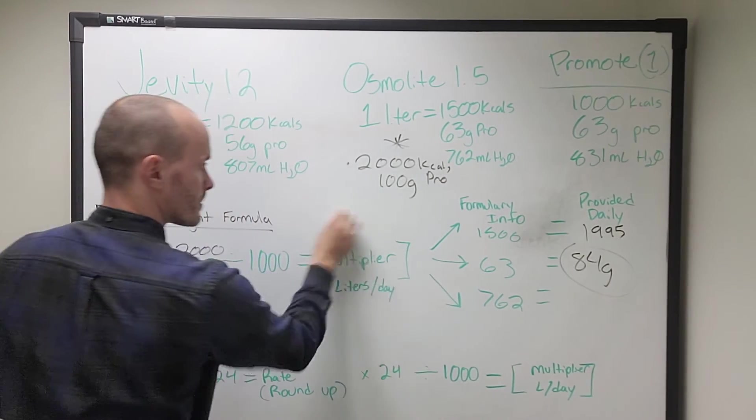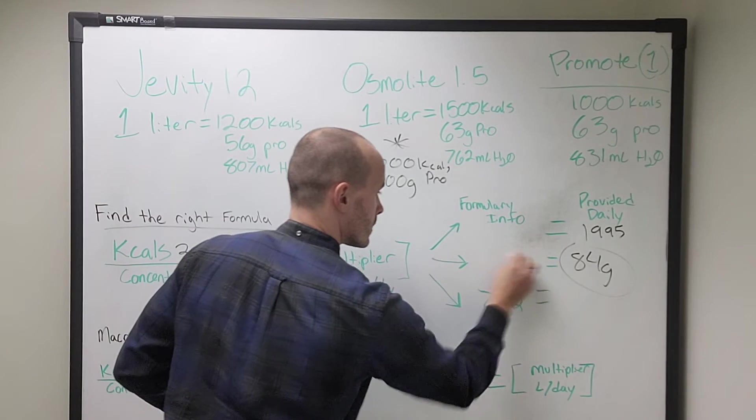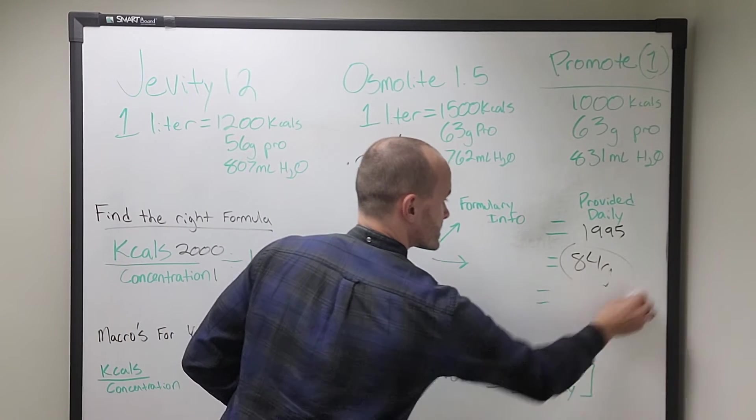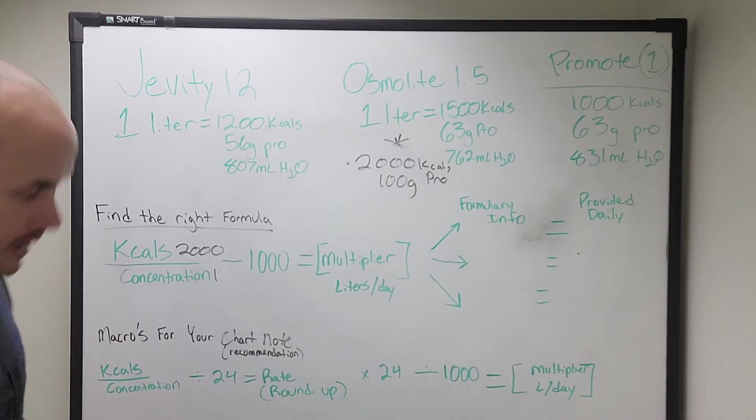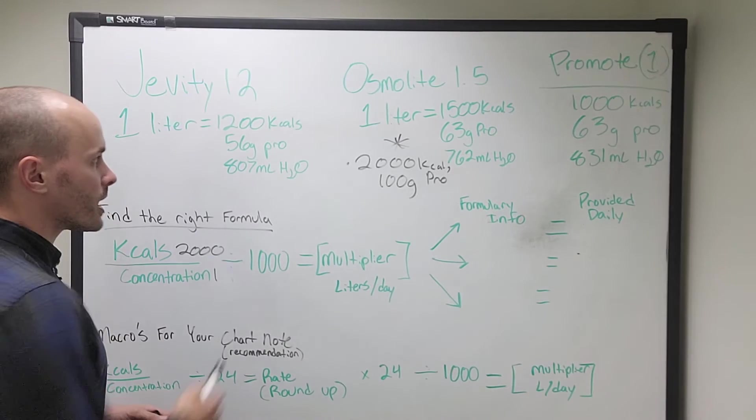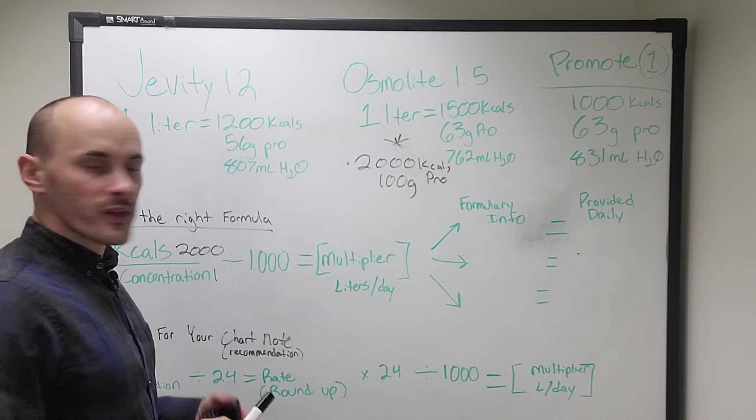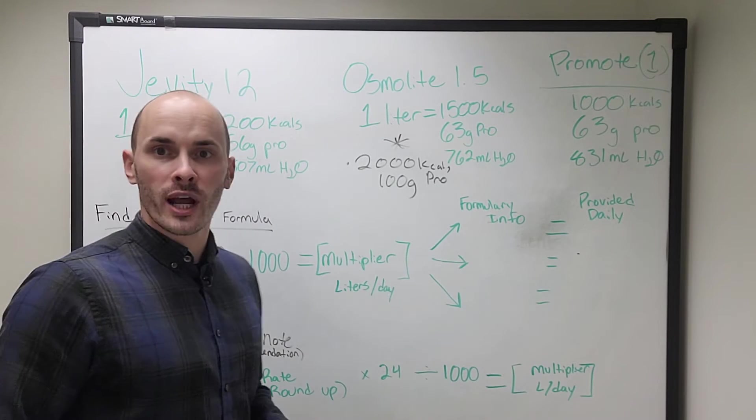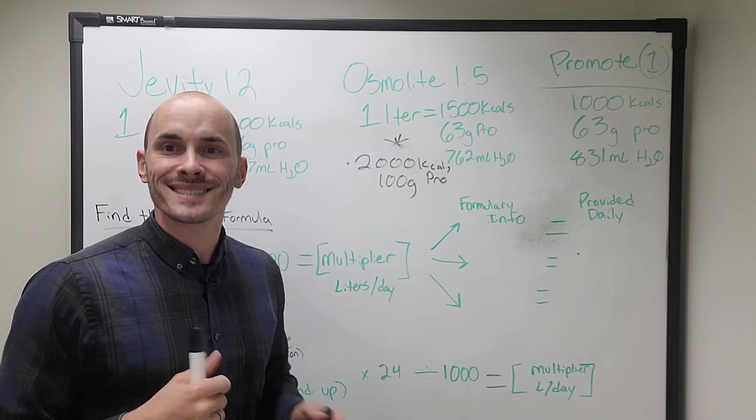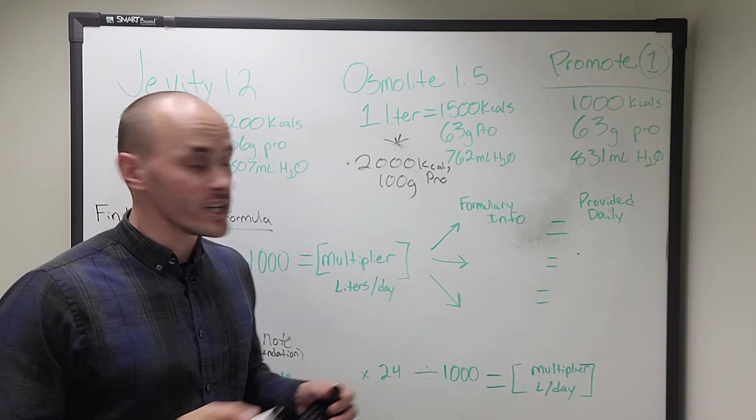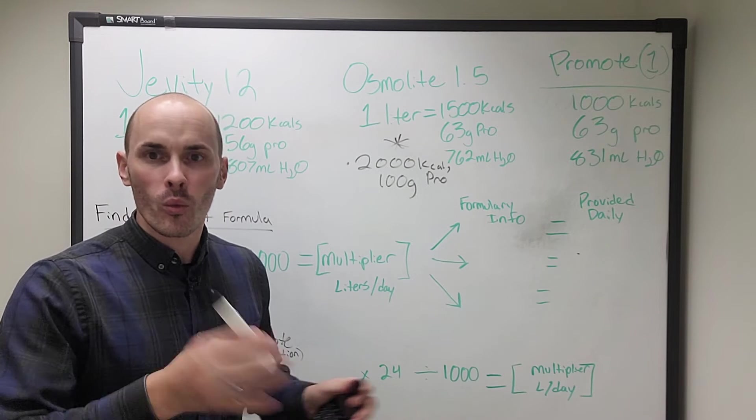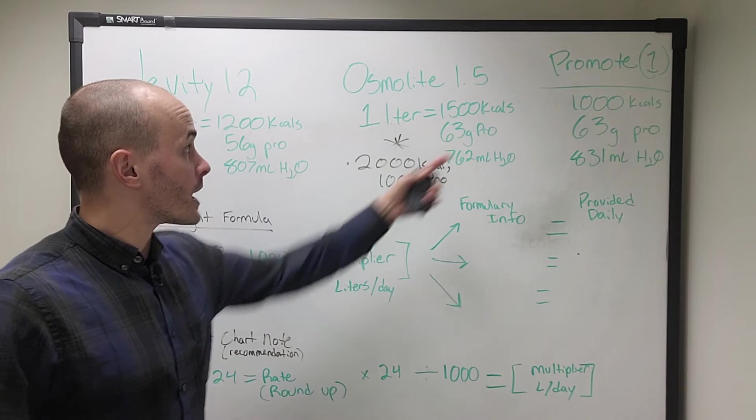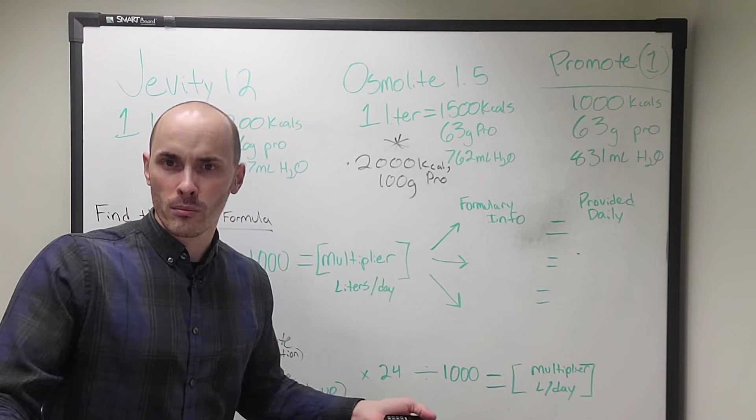Now let's try this again. I'm going to erase these numbers. We're going to erase these numbers here and let's try a different formula. So we have a patient here in the hospital. Their needs are 2,000 calories and 100 grams of protein. Osmolite's not going to meet that protein need without giving them a whole bunch of extra calories. We don't want that. So let's try a different formula. Let's try promote.